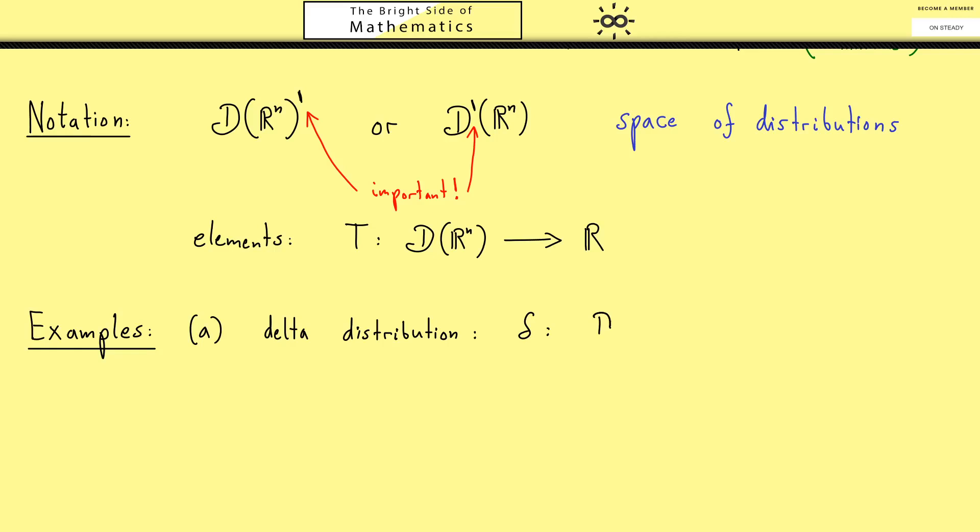We know it's a map delta which takes test functions and sends them to the real numbers, in the following way. We take a test function phi, and what should come out is the value of phi at the point zero. And now we have to check our two conditions: the linearity and the continuity. That this map is linear is indeed easy to see. Therefore I won't write it down.